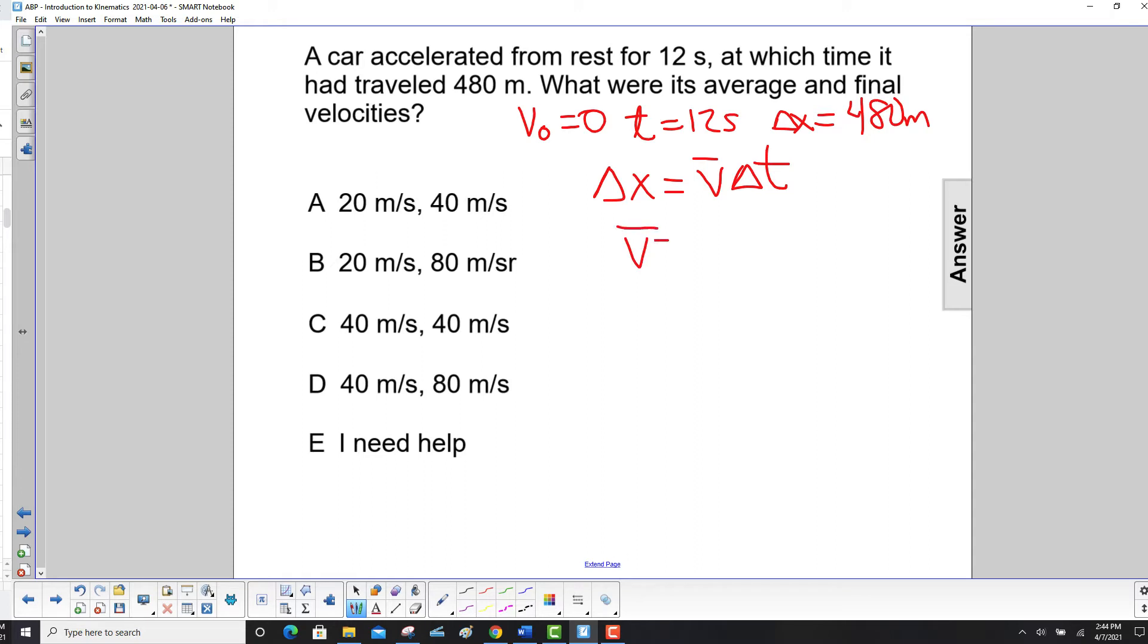Rearrange that, solve for average velocity, it's delta x over delta t, which is 480 meters divided by 12 seconds, and we get 40 meters per second.